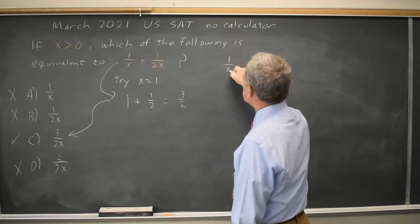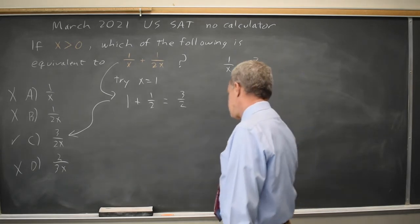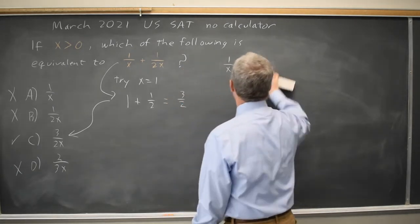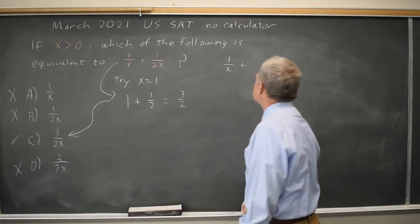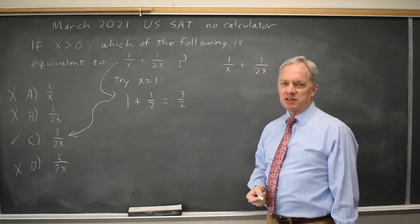I have 1 over x plus 2 over x. No, that's not what I have. I have 1 over x plus 1 over 2x. That's why I worry about algebra is typos can mess us up.